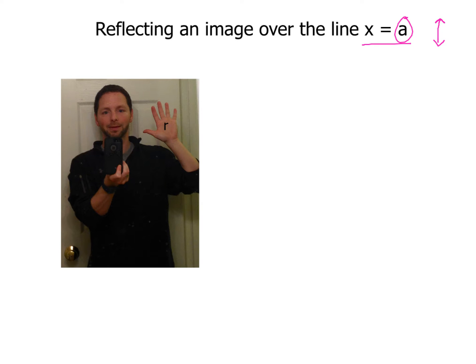First, I want you to pay attention to the letter R, which is on my right hand. The second thing that I want you to pay attention to is the doorknob, which is located in the lower left hand corner of the picture. Now if you're going to reflect an image over the line x equals a, so I'm just going to draw an imaginary line, and we're going to take this image that we have and we're going to reflect it over that line so that it's a mirror image of it. Check out what happens. Hocus pocus, alakazam, look what happens to the R in my hand.